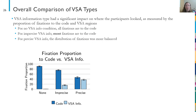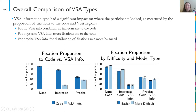Beginning with our overall comparison of the VSA types, we found that the VSA information type had a significant impact on where the participants looked, as measured by the proportion of fixations to the code versus the VSA region. When there was no VSA info available, people did not look at that region — which is a good thing, there was nothing to see there. When the imprecise VSA information was presented, people did look at it, but they spent much more time looking at the code. When precise VSA information was available, the distribution of fixations was more balanced. When looking at the same information broken down by difficulty, we see a slight trend toward people looking at the VSA information more when the problems were more difficult.